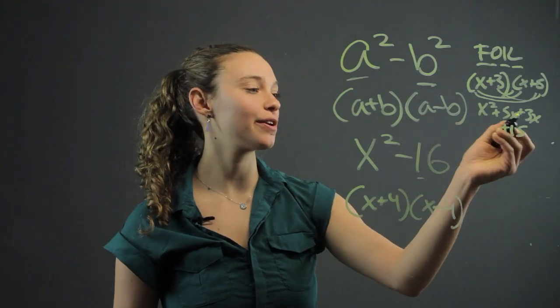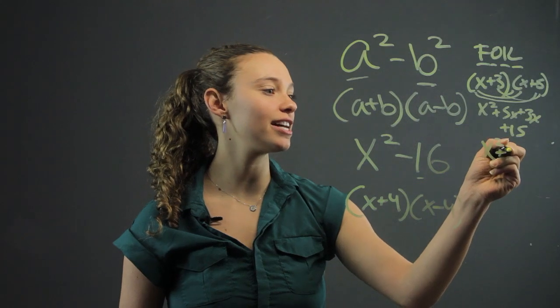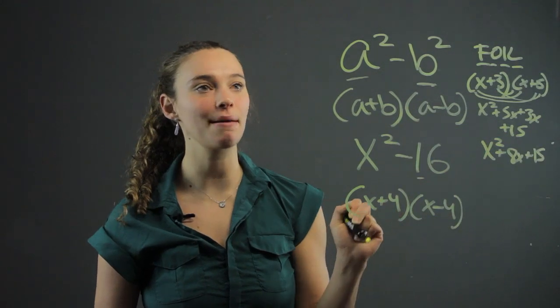So that gives us, if we're going to simplify, we add the 5x and 3x together: x squared plus 8x plus 15. And that's how we multiply binomials.